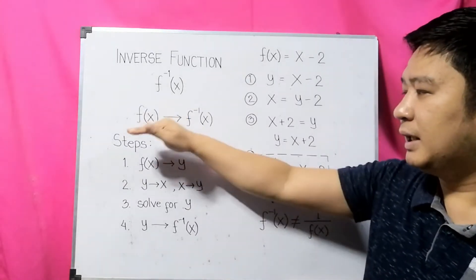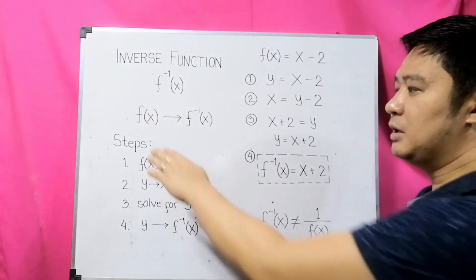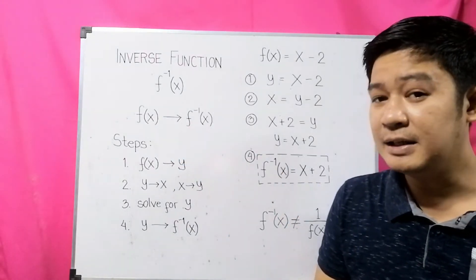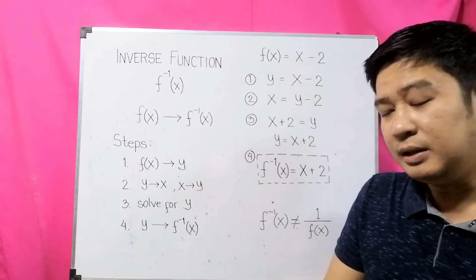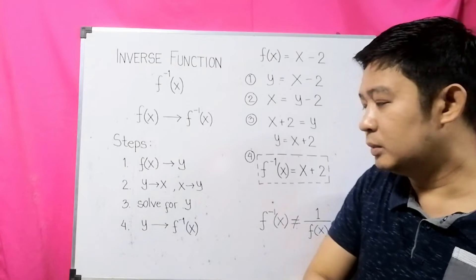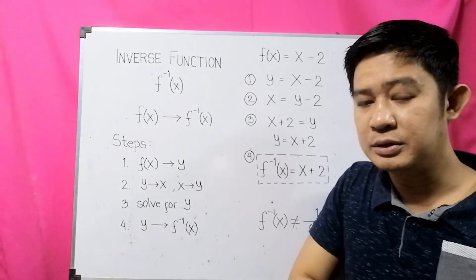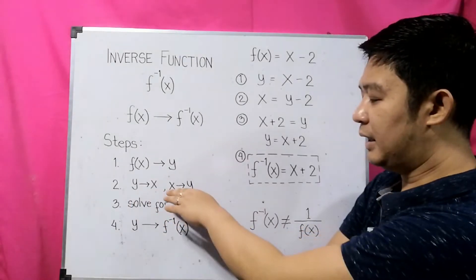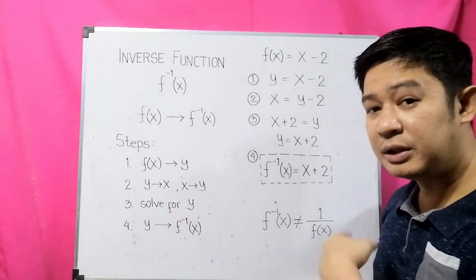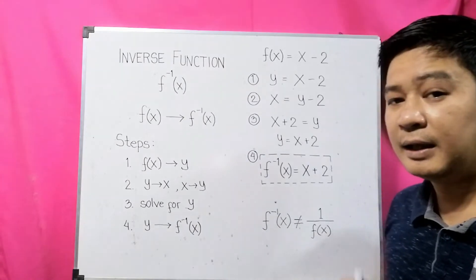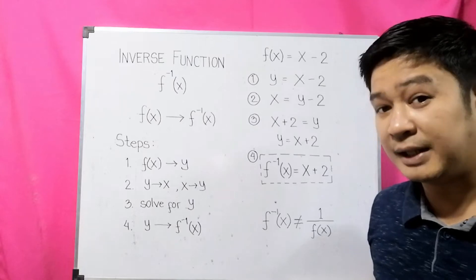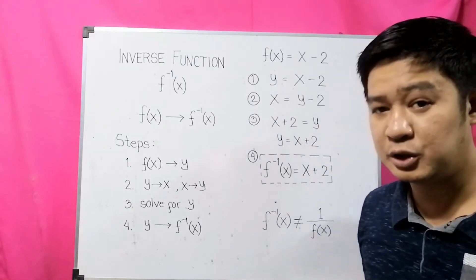We will now get the inverse of the original function — from f of x, the original function, we will determine its inverse. There are steps in getting the inverse function. Step 1: we change f of x into y. Step 2: we interchange the two variables. Step 3: we solve for y after interchanging the two variables. And Step 4: after getting y, we change y into f inverse of x, which is our inverse function.